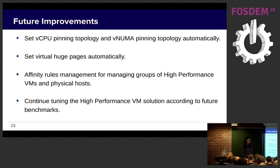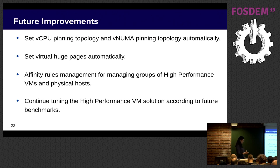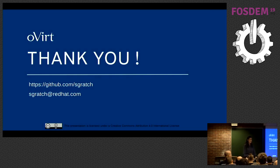Future improvements: we want to change all the manual pinning to be calculated automatically — automatically setting virtual CPU pinning, virtual NUMA node pinning, and virtual huge pages. We also want to add affinity rules management for managing groups of high performance VMs and hosts. And of course, we will continue tuning the high performance VM solution according to future benchmarks, since we always find more things to improve. That's all — I'm glad to hear any questions. Thank you.